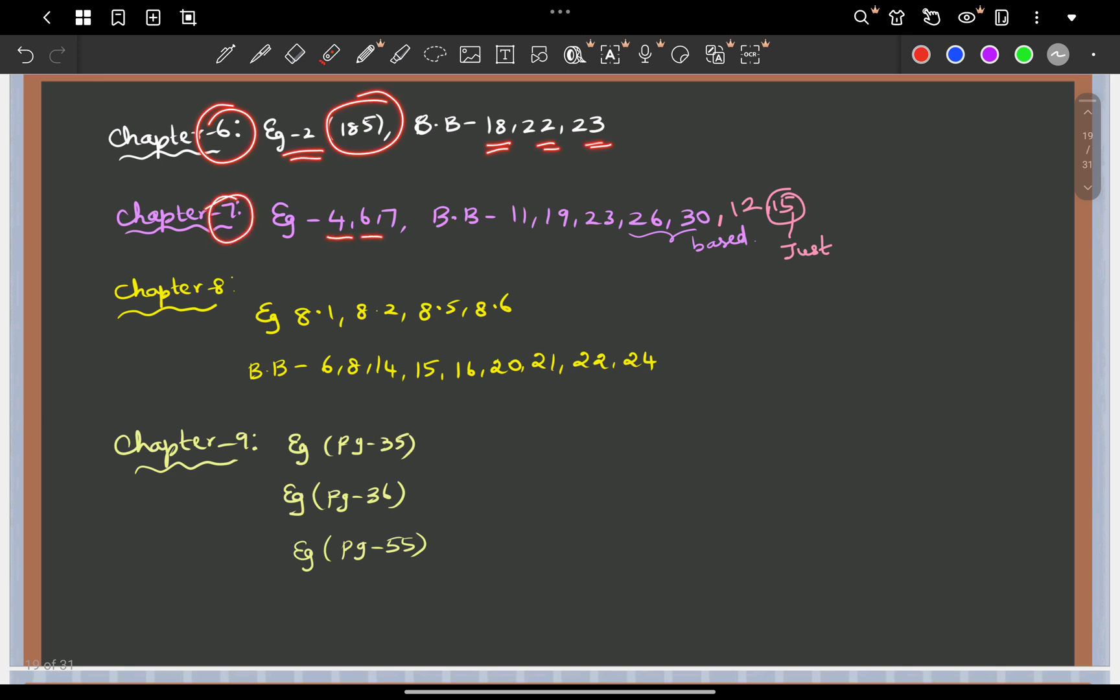Chapter 7 is chemical kinetics. Study examples 4, 6, and 7. Example 6 is very important. Then do bookback problems 11, 19, 23, 26, and 30. These include base problems and sometimes percentage calculations.